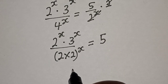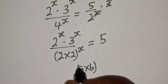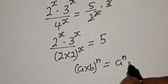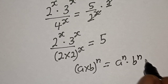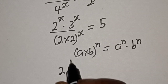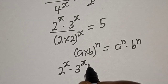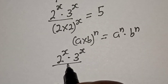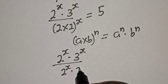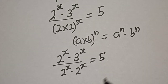And if you have a multiplied by b raised to power n, this is equal to a raised to power n multiplied by b raised to power n. So this becomes 2 raised to power x multiplied by 3 raised to power x over 2 raised to power x multiplied by 2 raised to power x is equal to 5.